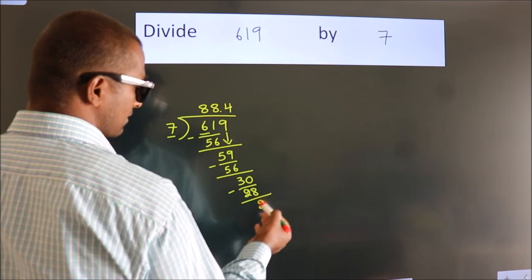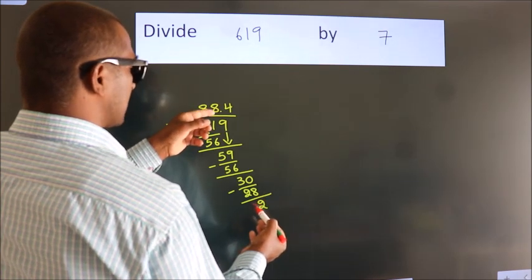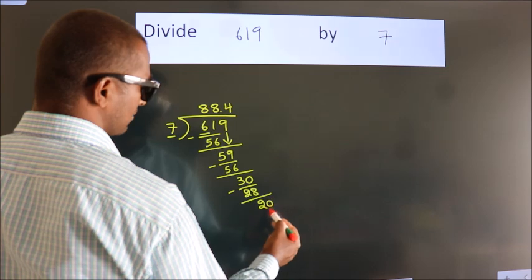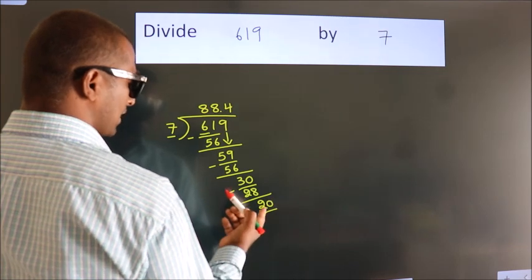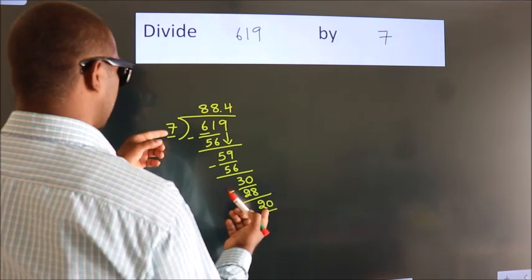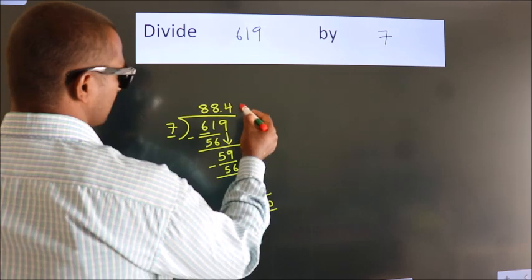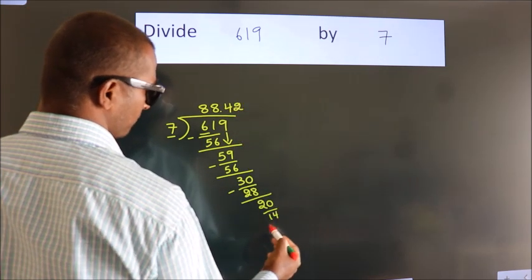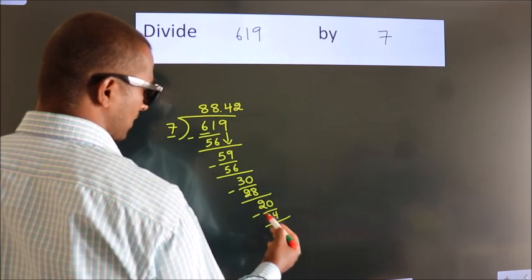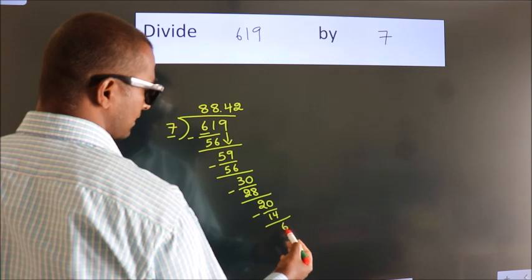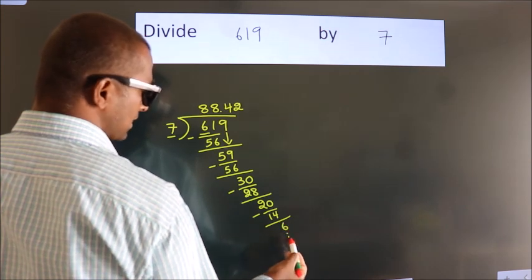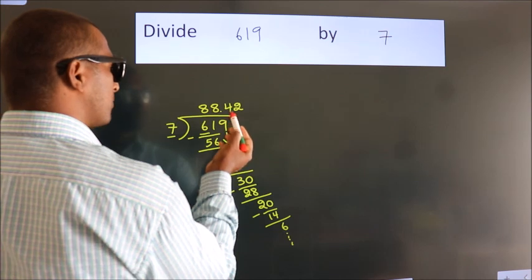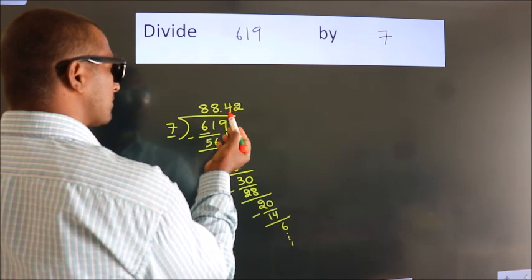After this, we already have the decimal, so directly take 0, making it 20. A number close to 20 in the 7 table is 7 × 2 = 14. Now we subtract and we get 6, and the division continues. It is enough if you do up to 2 decimal places.